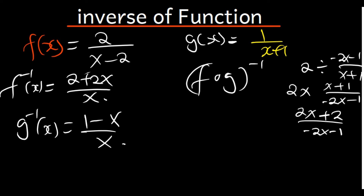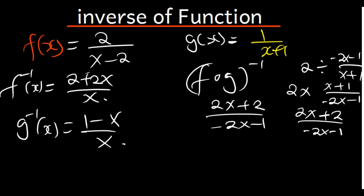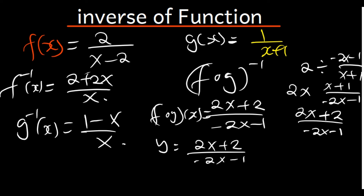Dividing by a fraction means multiplying by its reciprocal, so this becomes 2 times (x plus 1) divided by (negative 2x minus 1), which gives us (2x plus 2) divided by (negative 2x minus 1). This is our f of g of x. Now they want us to find the inverse of this, so we replace f(g(x)) with y.